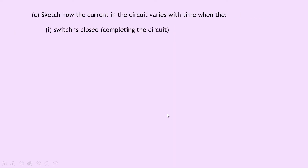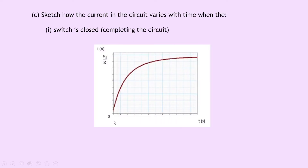Part C says to sketch how the current in the circuit varies with time when the switch is closed, i.e. completing the circuit. Well this is a simple DC circuit containing an inductor and a resistor, so as soon as the switch is closed, the current in the inductor will start to increase. We'll see this growth of current from 0 amps up to a maximum current value, which is defined by Vs over R, i.e. Imax equals Vs over R.